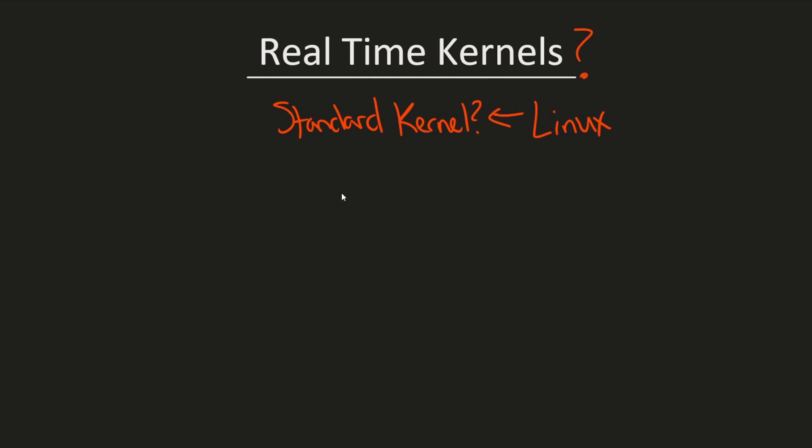Well, for the most part, the three things that really distinguish these two are that a real-time kernel offers low latency. Two, it is deterministic, and we'll talk about these terms in a moment. And finally three, it has predictable or at least consistent response times. So these are the three major things that make up a real-time kernel.